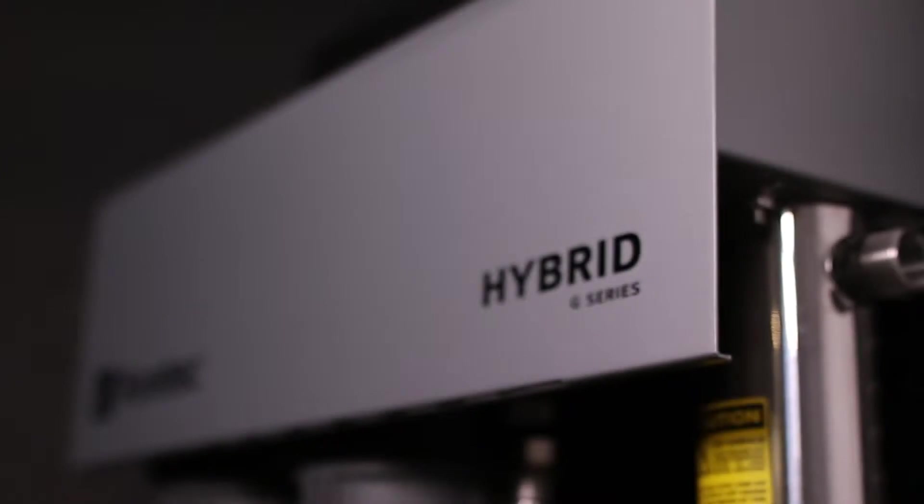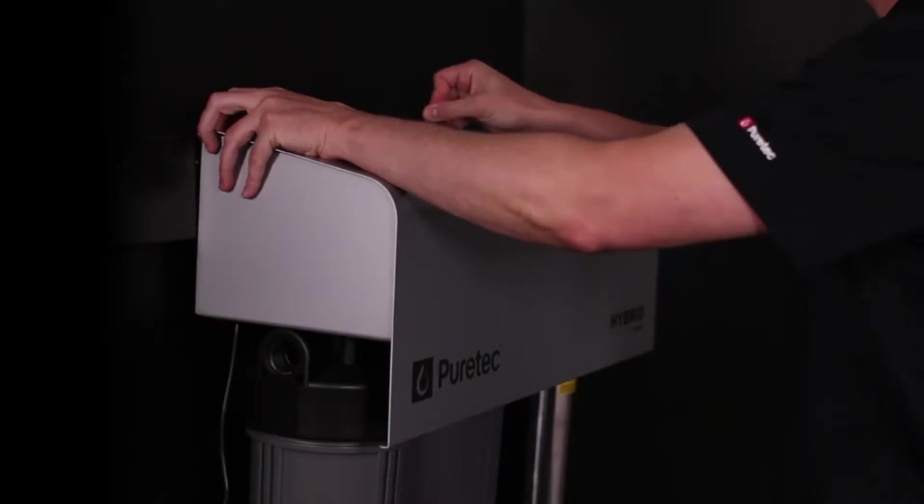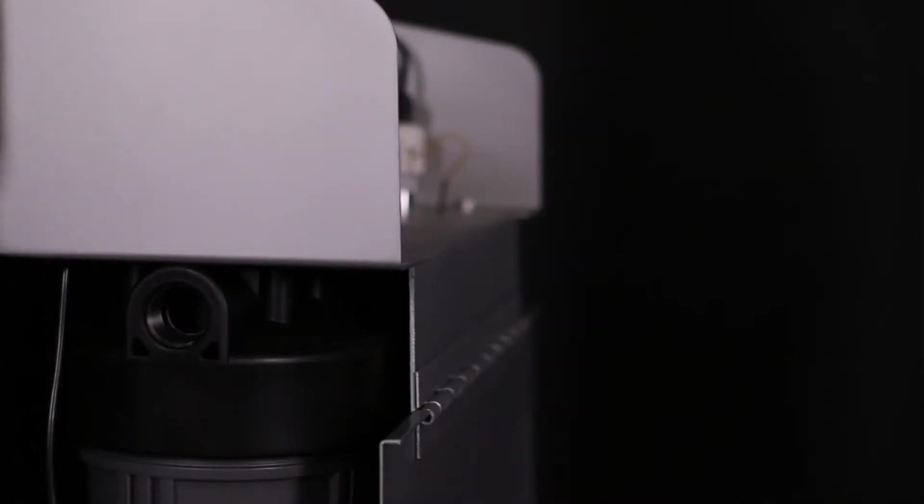PureTech Hybrid G-Series systems incorporate a unique aluminum weatherproof lockable cover, hinged for easy maintenance. This means the PureTech Hybrid G-Unit is child and tamper-proof.